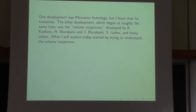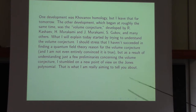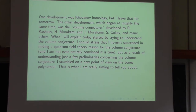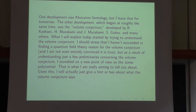What I'll explain today started by trying to understand the volume conjecture. I haven't succeeded in finding a complete reason for the volume conjecture, and if anything, I've become a little suspicious of whether it's true. But just to reformulate the volume conjecture in terms of Feynman integrals, I had to learn a few things, and those things led to a new point of view of the Jones polynomial. The purpose of today's lecture is to explain what happened when I tried to formulate the volume conjecture in terms of integration over gauge fields.